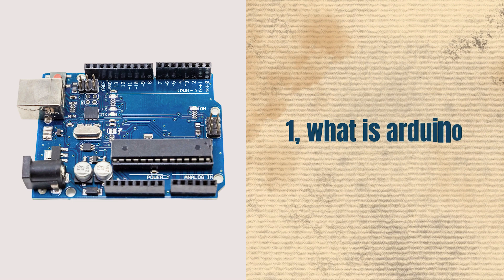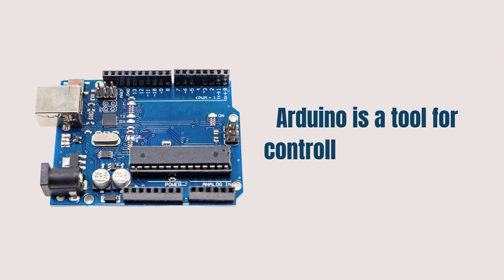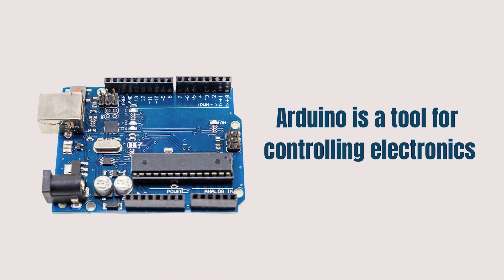What exactly is Arduino? The best way to understand Arduino is to look at what it can do. Simply put, Arduino is a tool for controlling electronic components. Think of it like a pencil — a pencil is a tool that helps you write, and if you need to write something you pick up a pencil. Arduino works in a similar way: it's a tool that helps you control electronic devices.